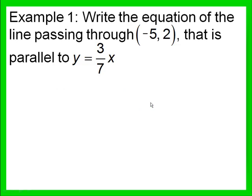Our first example: write the equation of the line passing through the point that is parallel to the line y equals 3 over 7x. The first thing to notice is that the equation y equals 3 over 7x is in slope-intercept form. That means we can read off of this equation the slope of its line, and we need this slope in order to write our line.